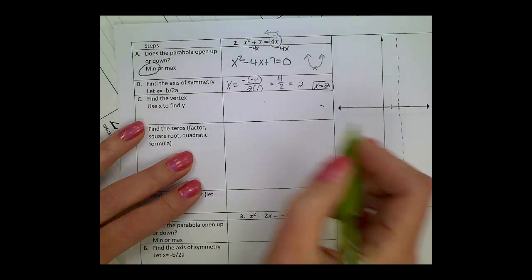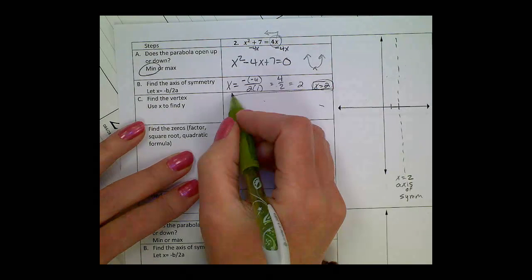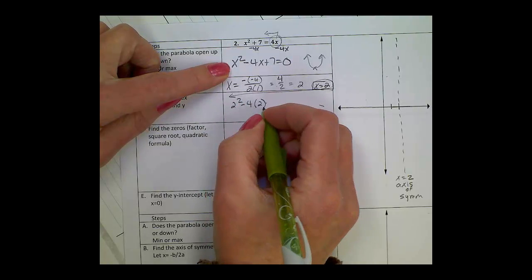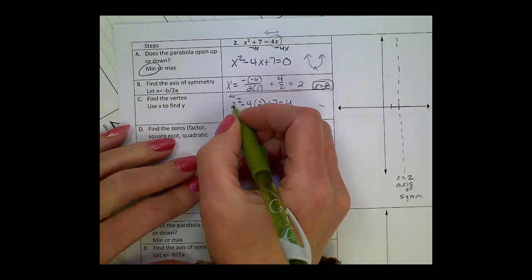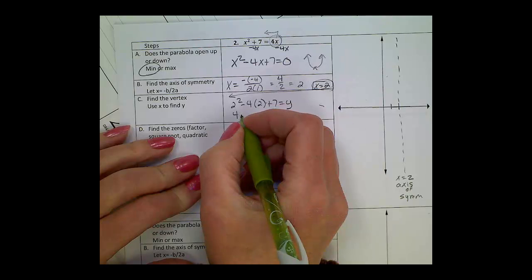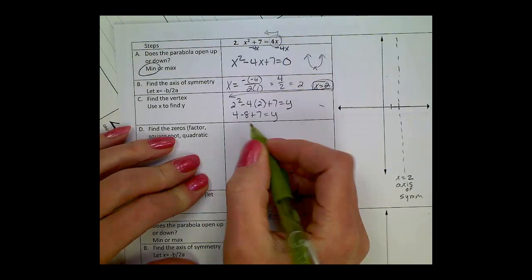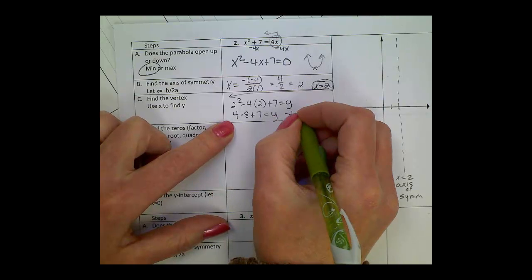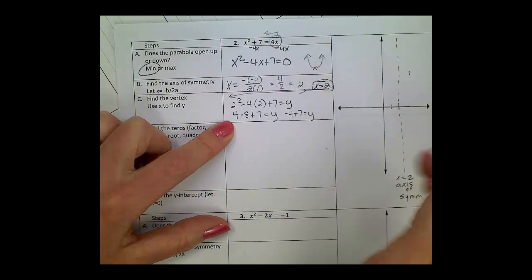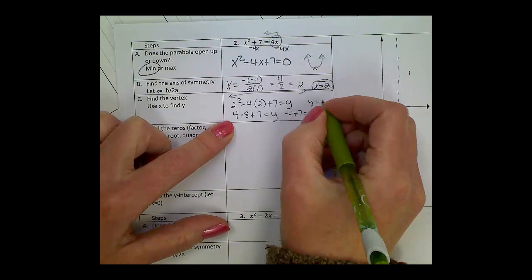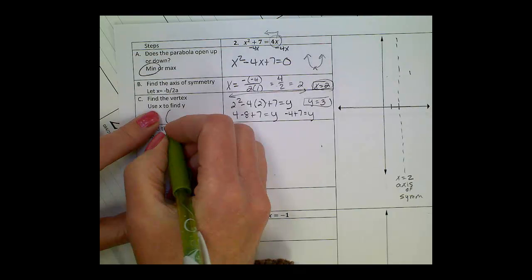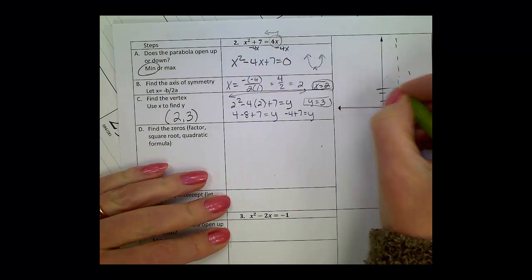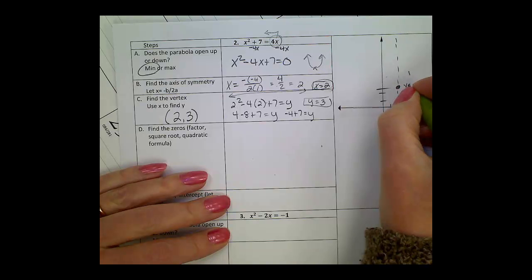Alright, to find the vertex, we're going to use that point, plug it into the equation. So, we're going to have 2 squared minus 4 times 2 plus 7 equals y. 2 squared gives me 4. A negative times a positive will give me a negative 8 plus 7. Let's try to mental math this a little. 4 minus 8 would give me a negative 4 plus 7 equals y. Eventually, we'll get y is equal to 3. But remember, your vertex is an ordered pair. So, when x was 2, y is 3. So, we go up 2 and up 3 and plot your point. And that's your vertex.